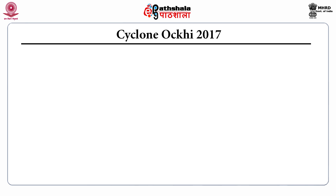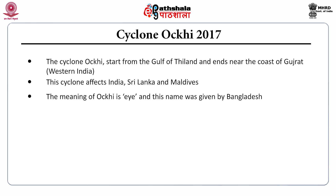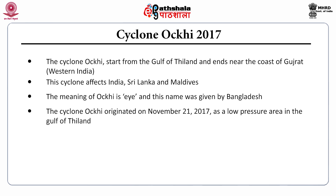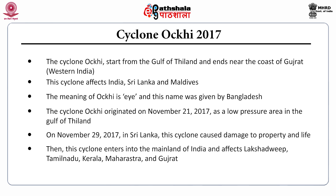Then, Cyclone Ockhi 2017. Cyclone Ockhi started from the Gulf of Thailand and ended near the coast of Gujarat in western India. This cyclone affected India, Sri Lanka and Maldives. The meaning of 'Ockhi' is 'eye' and this name was given by Bangladesh. Cyclone Ockhi originated on November 21st, 2017 as a low pressure area in the Gulf of Thailand. On November 29th, 2017, in Sri Lanka, this cyclone caused damage to property and life. Then it entered the mainland of India and affected Lakshadweep, Tamil Nadu, Kerala, Maharashtra and Gujarat.